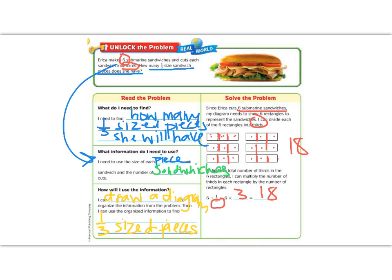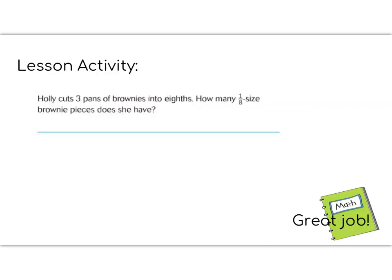Great job so far, fifth graders. All right, ready for our lesson activity. Today's lesson activity has Holly cuts three pans of brownies into eighths. How many one eighth size pieces does she have?